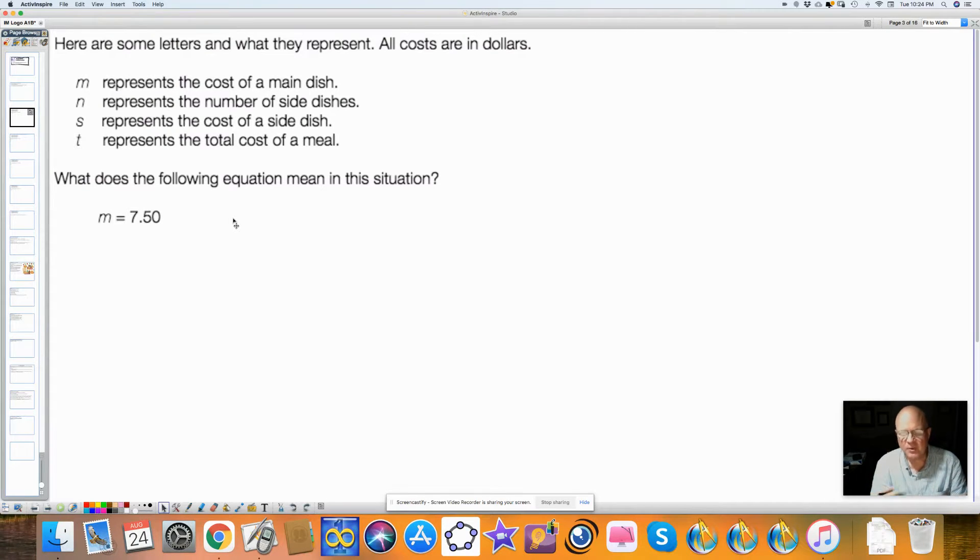So the first part of this was the warm-up, and they were given some letters, and the amounts, the costs, were in dollars. So M represents the main dish and the cost of the main dish, which was in dollars. N is the number of side dishes. It is not a dollars amount. It's how many side dishes there are. S would be side. S is for the cost of the side dish. And T would represent the cost of a meal.